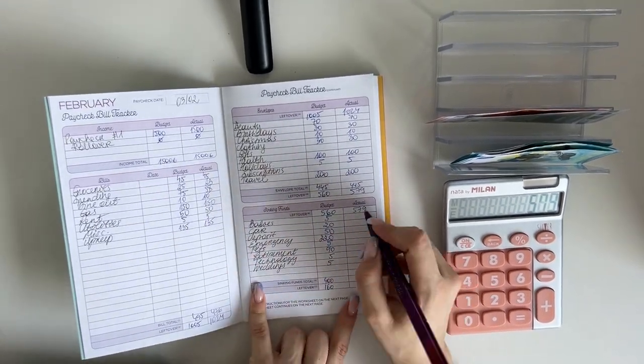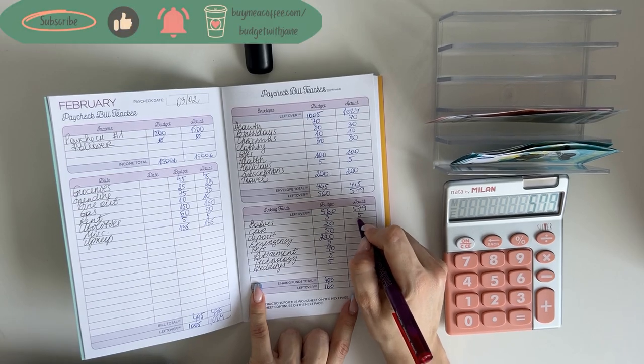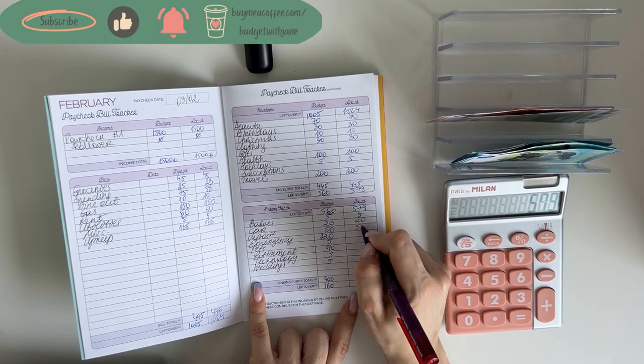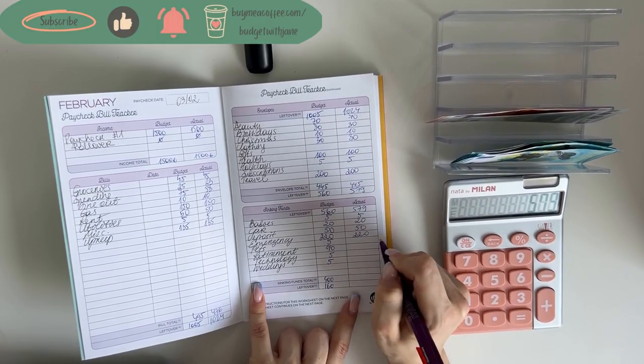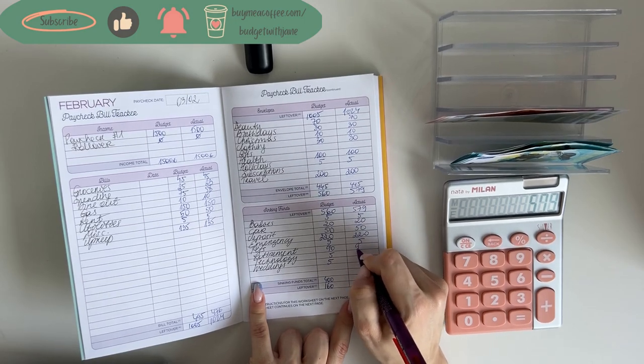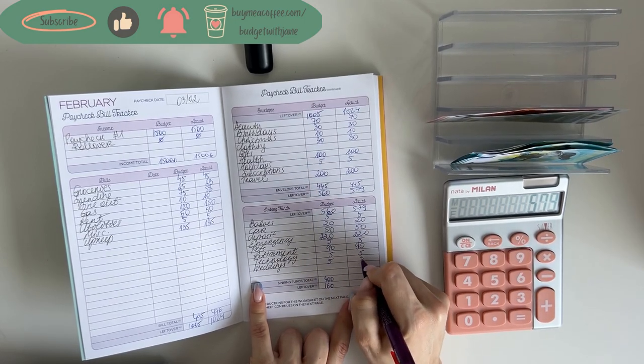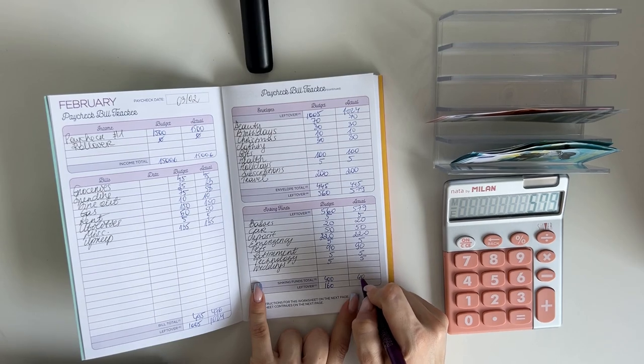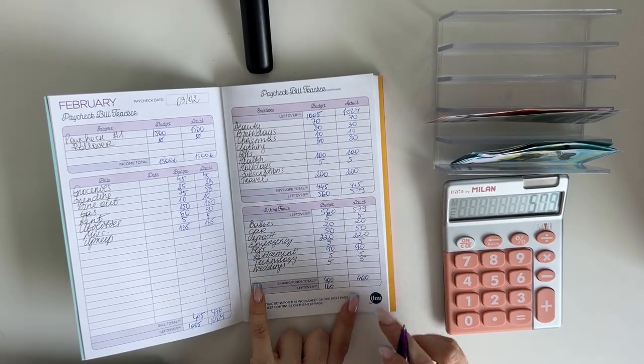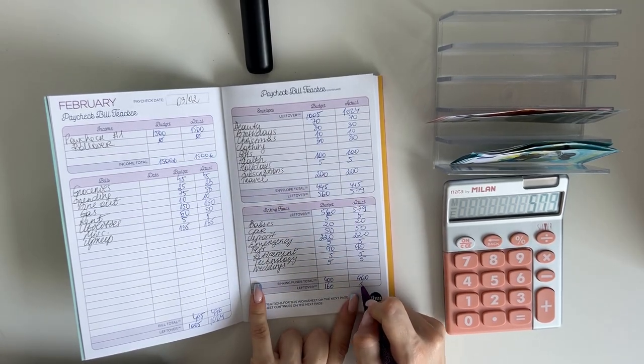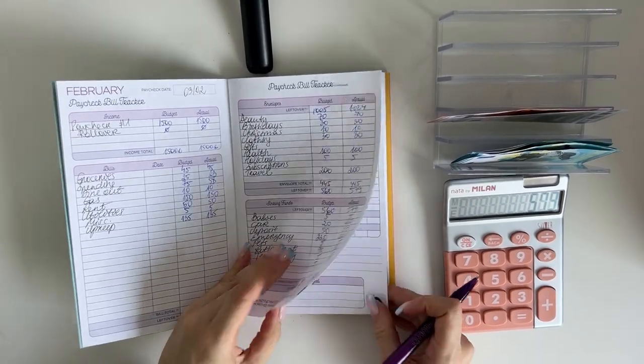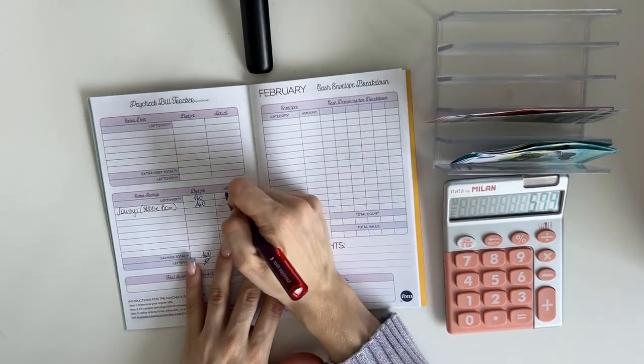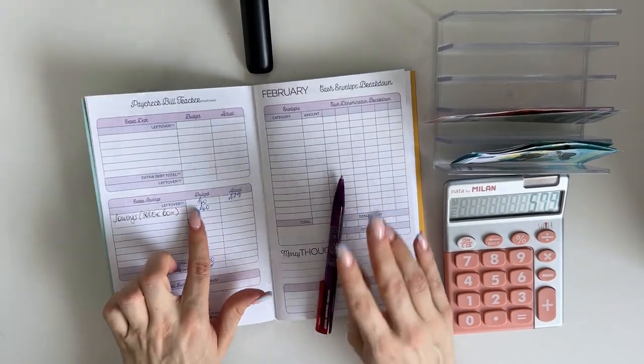And 1,024 minus 445 is 579. Bringing that to long-term sinking funds, everything stayed the same. 5 for babies, 20 for car, 50 for deposit, 220 for emergency, 5 for pets, 90 in retirement, 5 in technology, and 5 in weddings. That was 400. So 579 minus 400 is 179.